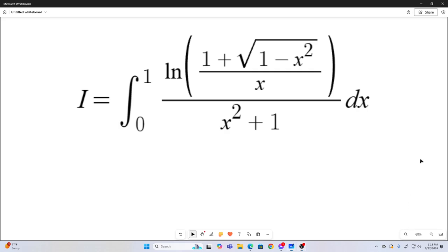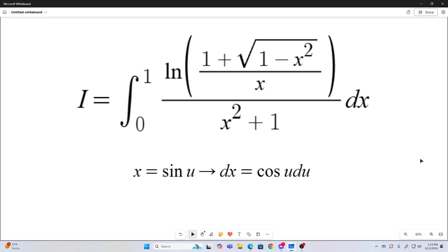Our first step is to make the following substitution. We'll let x equals sine u, therefore dx is equal to cosine u du. And the motivation for that is so that this square root of 1 minus x squared would just become cosine u.